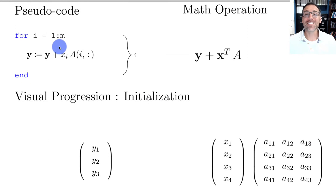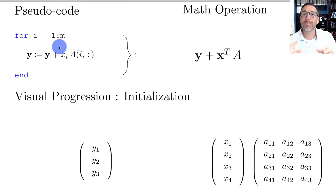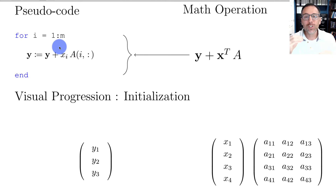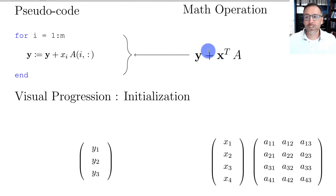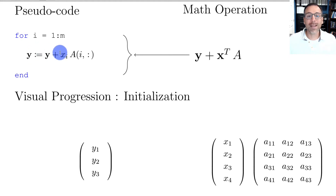One of the ways to strengthen understanding is to look for multiple representations of each technical idea. We've written code and looked at the mathematical definition — now let's visualize. The mathematical operation is y + x^T * A, translated into pseudocode on the left as: y gets y plus x_i times the i-th row of A.